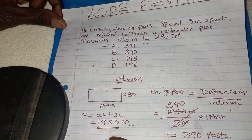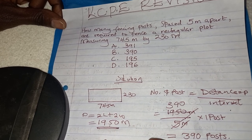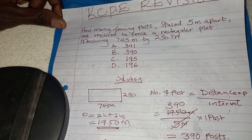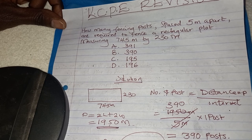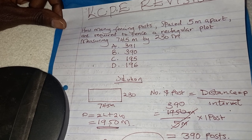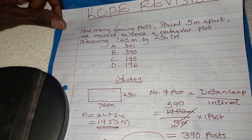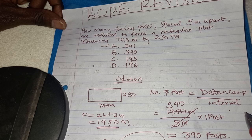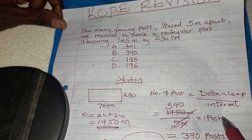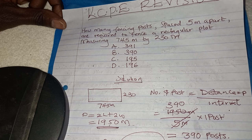For instance, if you are told the gate is 2 meters, the perimeter becomes 1950 minus 2. After you get the difference, you divide by the interval using the formula: distance over interval plus 1. We add 1 because there is a gate. But if there is no gate, you just divide distance by interval without adding 1.